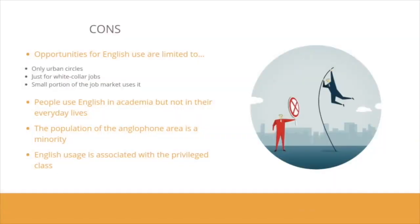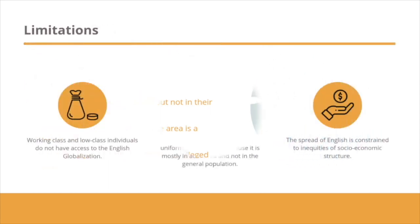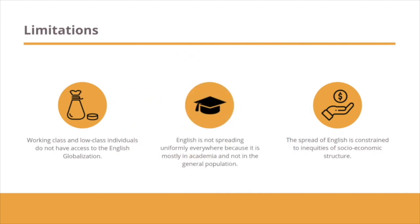So what are the cons? Opportunities for using the English language are only constrained to urban circles, white-collar jobs, and a small portion of the job market. People use English only in the academic world and not in everyday lives. The anglophone population is a minority and it is only associated with the privileged class. Therefore, the working class and lower class individuals do not have any access to the benefits of English globalization. English is not spreading uniformly everywhere, and the general population does not have access to it. The spread of English is constrained by inequities of socioeconomic structure.